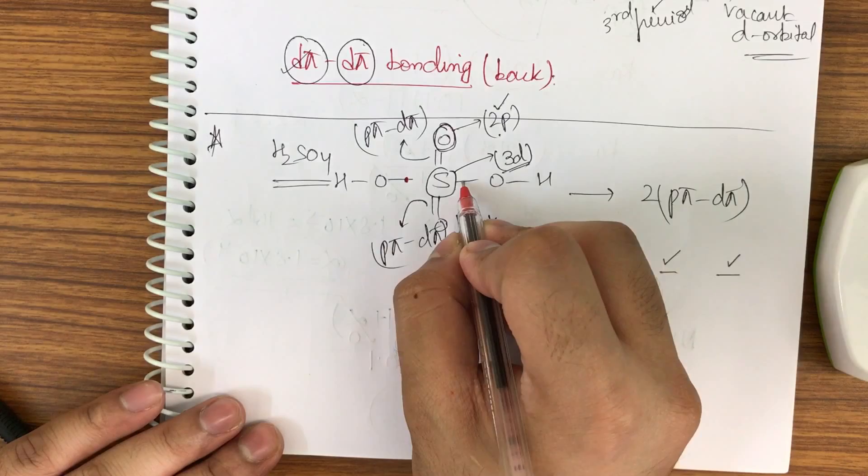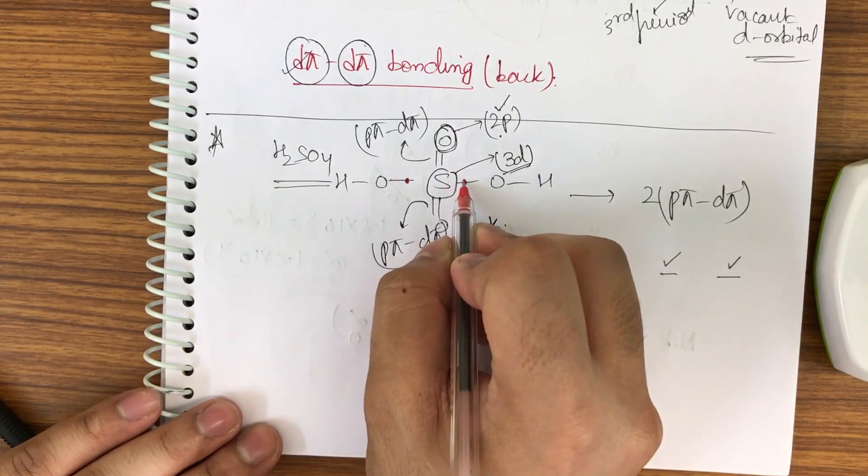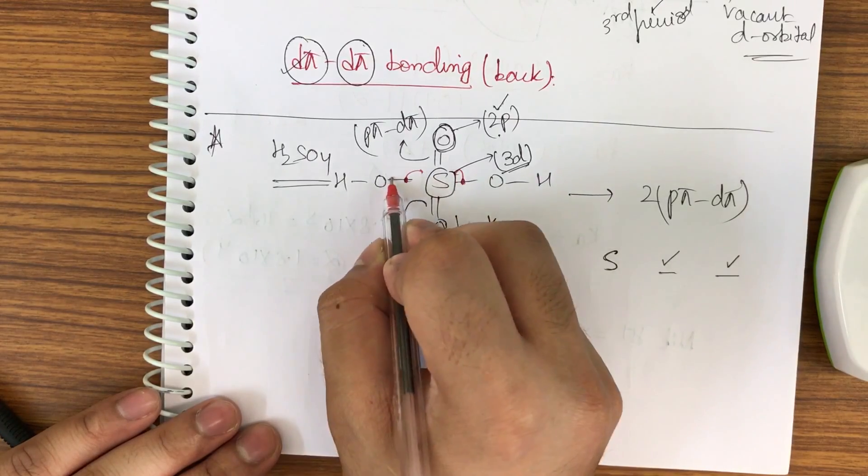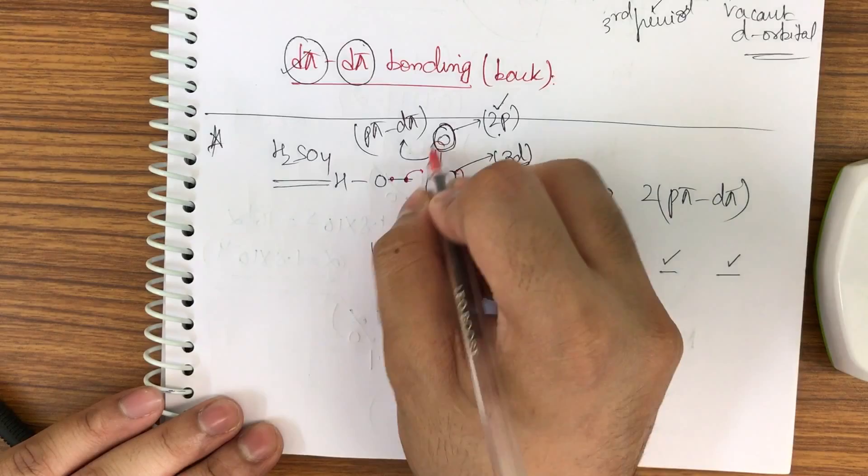So I am supplying the electrons by this bond - listen to it carefully - I am supplying through this pi bond and this pi bond, one electron extra each, that is of oxygen. So I have got the valency fulfilled.